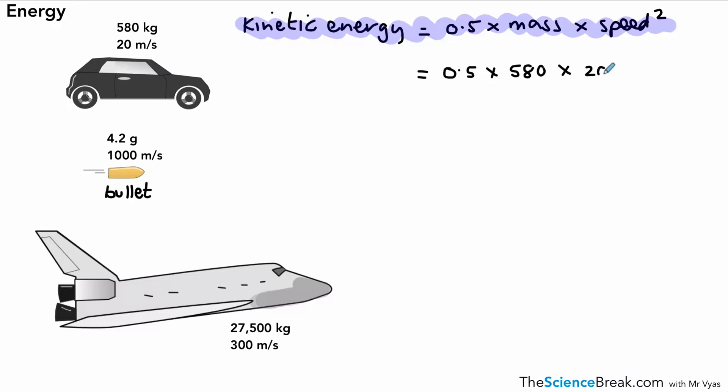So for the moving car, we have, if we put in the numbers, 0.5 times 580 times 20 squared—or you can put 20 times 20 into your calculator—and you will end up with an answer of 116,000 joules, which is also the same as 116 kilojoules. Remember, kilo means a thousand, so we divide the joules by a thousand to get kilojoules.